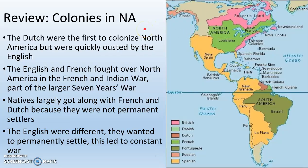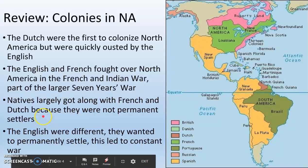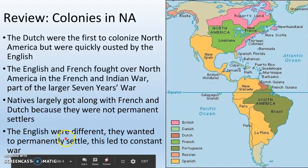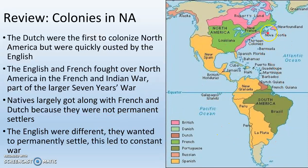We talked about colonies in North America — how the Dutch were the first to colonize North America but were quickly ousted by the English. Then the English and French fought over North America in the French and Indian War, as part of the larger Seven Years' War. The natives largely got along with the French and the Dutch because they were not permanent settlers, but the English were different — they wanted to permanently settle, which led to constant warfare between Native Americans and the English.